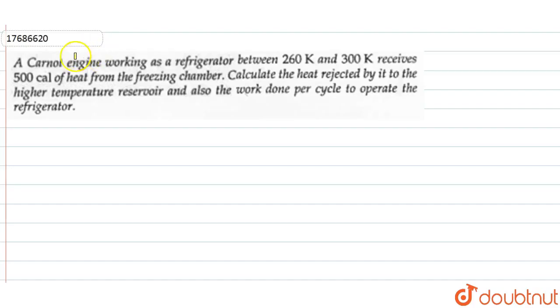In this question, a Carnot engine is working as a refrigerator between 260 Kelvin and 300 Kelvin. It receives 500 calories of heat from the freezing chamber. We have to calculate the heat rejected at the higher temperature reservoir and also the work done per cycle to operate the refrigerator.